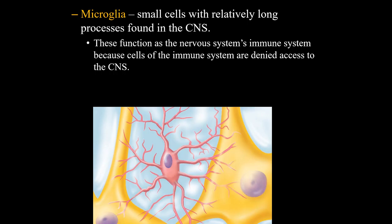Next up, you have microglia. Your whole immune system is not allowed within the central nervous system. It's like the difference between regular police and secret police - regular police would be your whole immune system, allowed everywhere except the CNS. Here, we get the secret service, which are the microglia. They're still performing the function of the immune system, but only within the central nervous system - same basic function, but specialized cells.